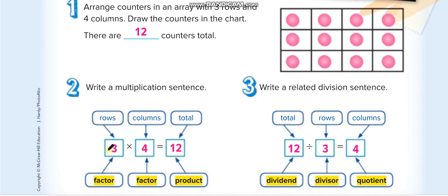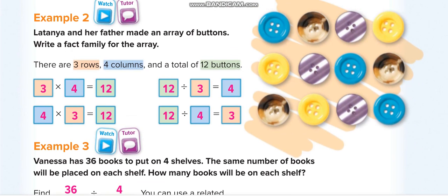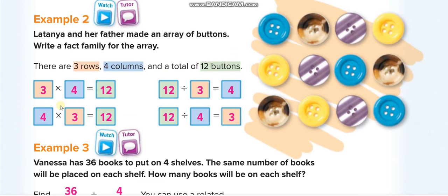This is known as the fact family. You can say three times four equals twelve, four times three equals twelve, and then in the opposite direction: twelve divided by four equals three, or twelve divided by three equals four.